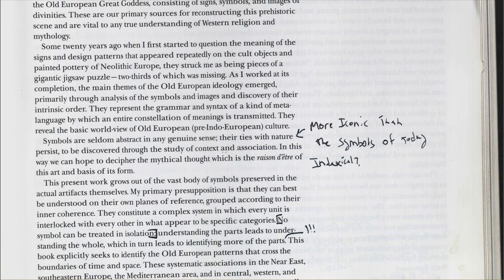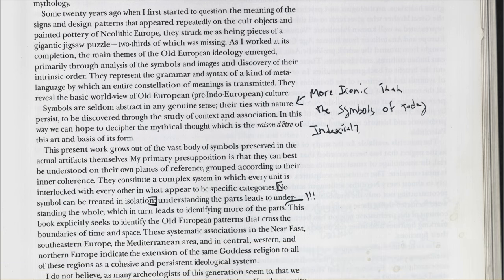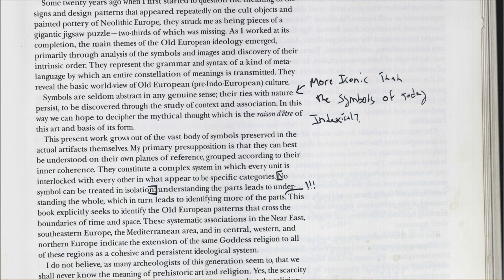This present work grows out of the vast body of symbols preserved in the actual artifacts themselves. My primary presupposition is that they can best be understood on their own planes of reference, grouped according to their inner coherence. They constitute a complex system of which every unit is interlocked with every other in what appear to be specific categories. No symbol can be treated in isolation. Understanding the part leads to understanding the whole, which in turn leads to identifying more of the parts.